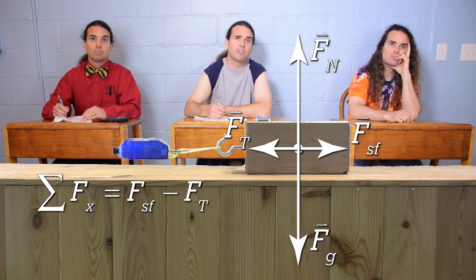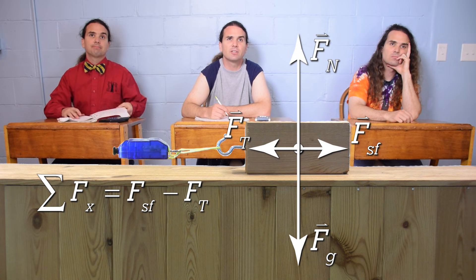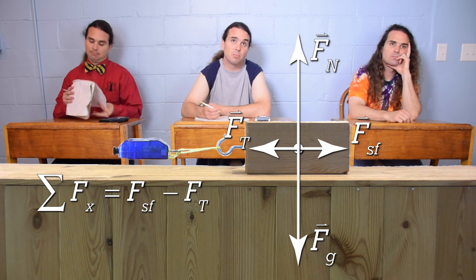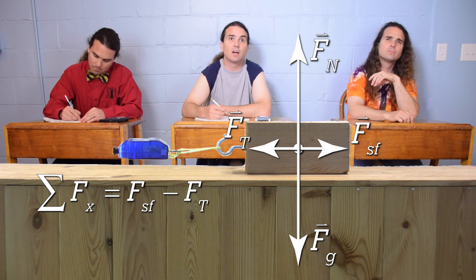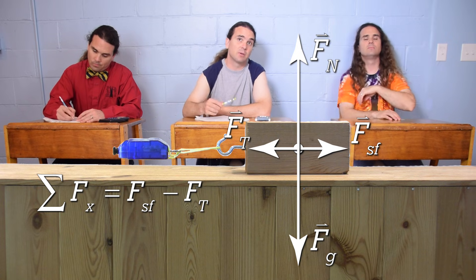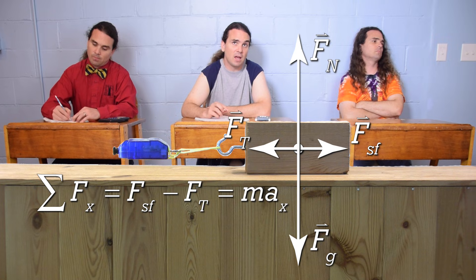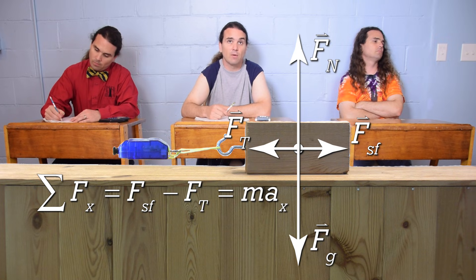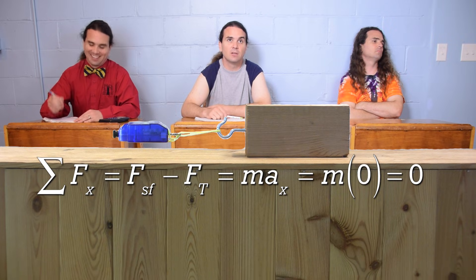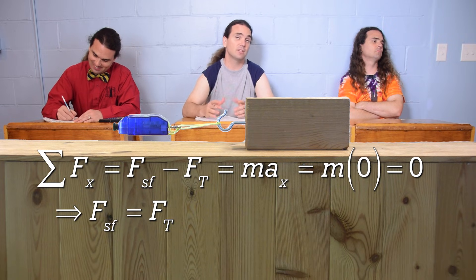The net force in the x direction equals the force of static friction, which is positive because it's to the right, minus the force of tension, minus because it's to the left. All that equals the mass of the block times the acceleration of the block in the x direction. However, the block isn't moving, so the acceleration in the x direction equals zero. Therefore, the force of static friction equals the force of tension.